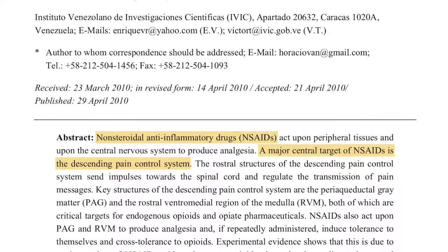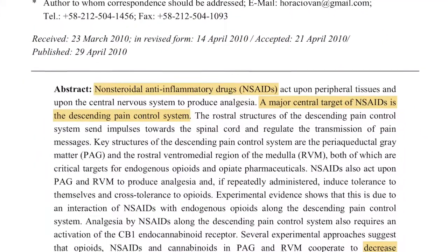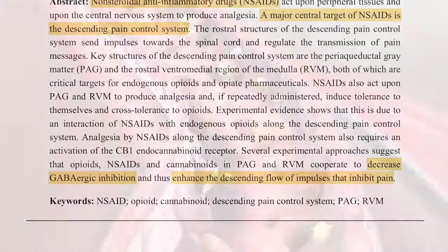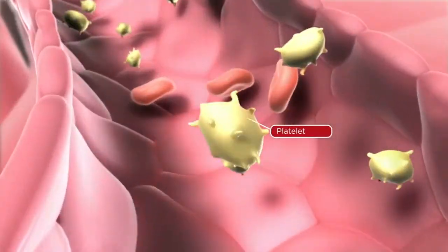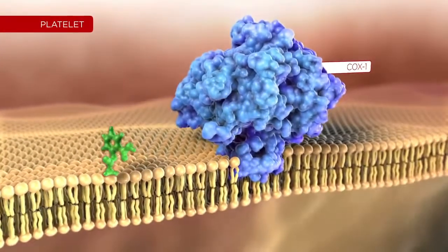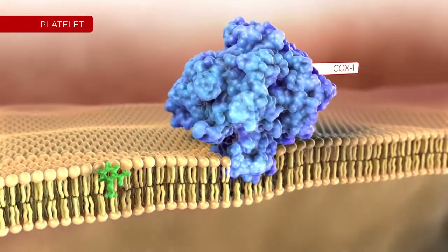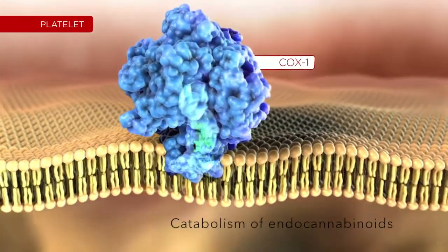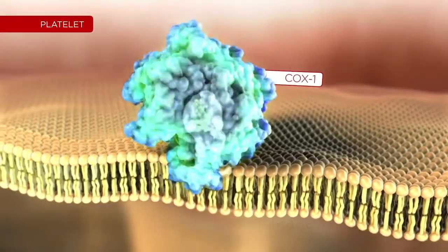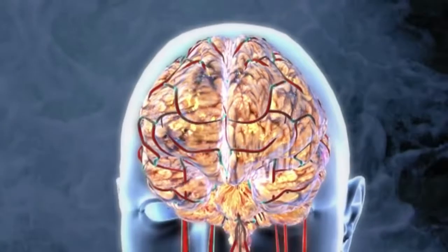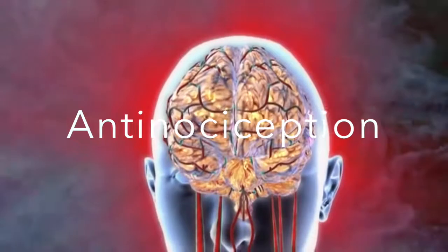Non-steroidal anti-inflammatory drugs, also known as NSAIDs, are a class of drug that provide antipyretic and analgesic effects. NSAIDs work by inhibiting enzymes like cyclooxygenase, or COX, which has a major role in inflammation and pain. If COX enzymes are not inhibited, it leads to the catabolism of anandamide and other endocannabinoids. Opioids, alpha-2 adrenergic receptor agonists, and NSAIDs can each work synergistically with cannabinoids to achieve antinociception.